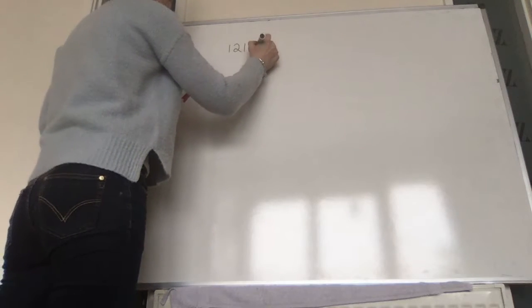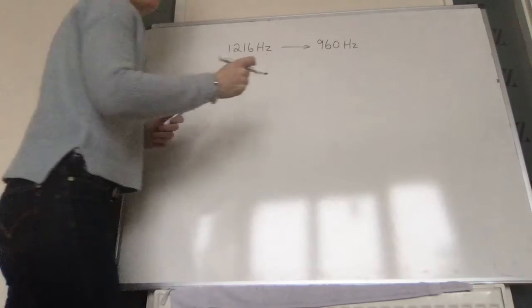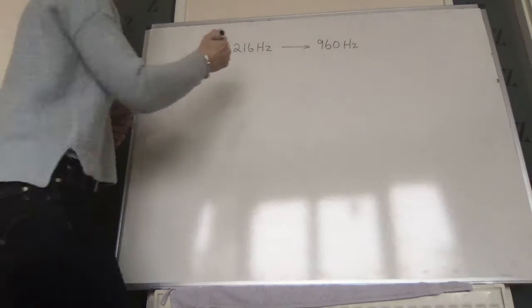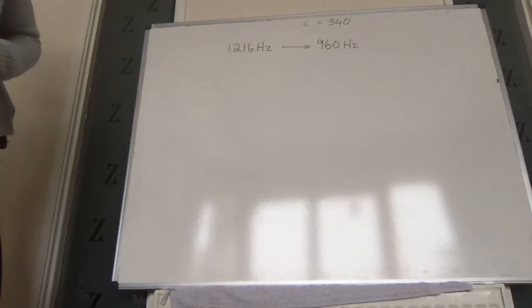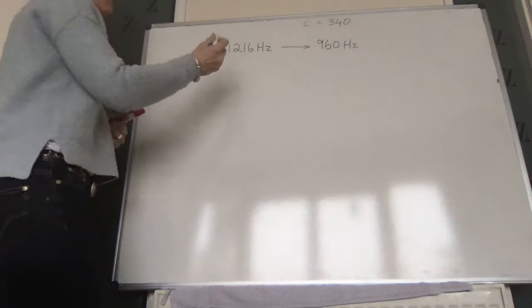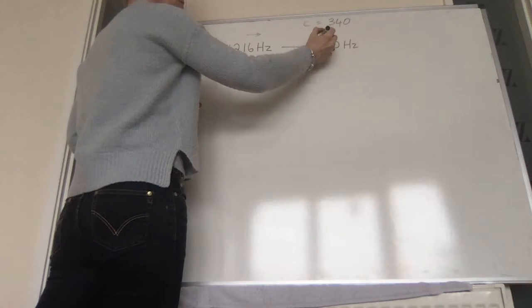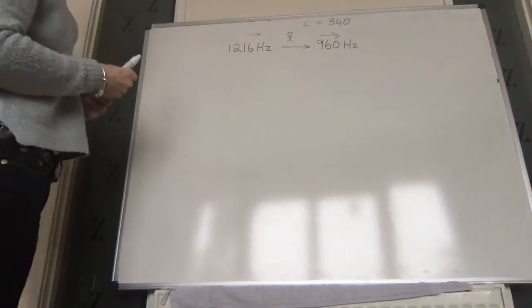A train travelling at a constant speed passes through a station. To a person standing on the platform, the note emitted changes from 1,216 hertz to 960 hertz. The speed of sound in air is 340 metres per second. Find the velocity at which the train was travelling and the actual frequency of the note. Neither 1,216 Hz nor 960 Hz is the actual frequency emitted by the train.